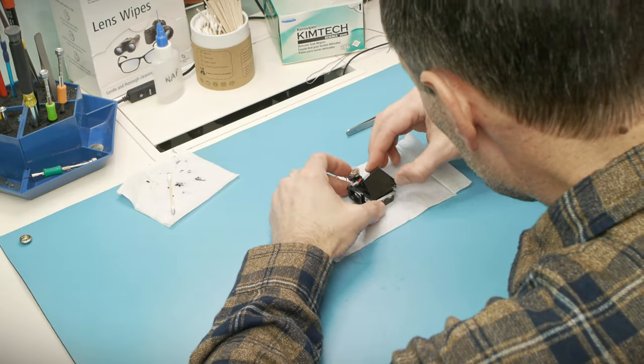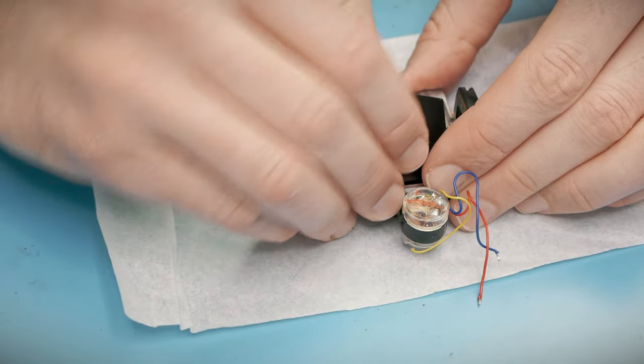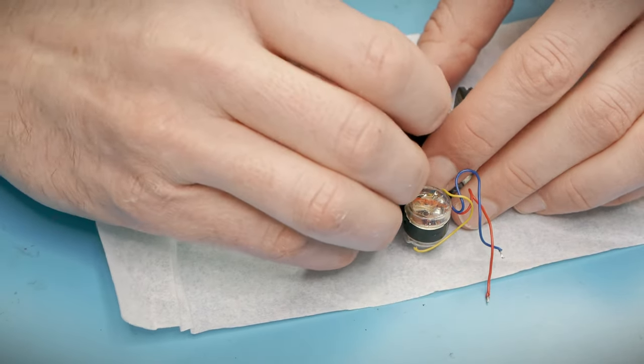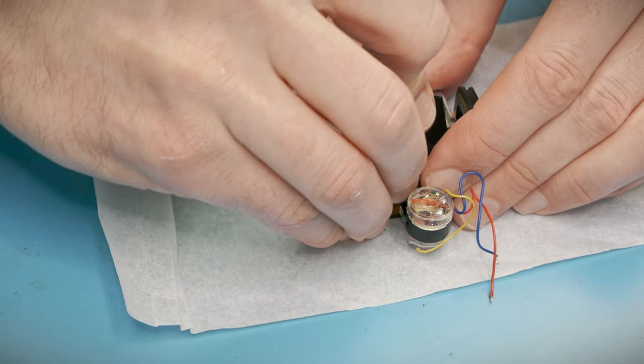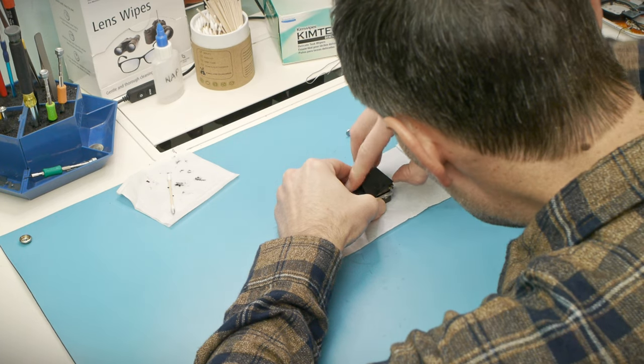And that's because these screws not only hold the pentaprism in place, but they also control the side-to-side alignment of the image in the viewfinder. If I only loosen one, then I can more easily reinstall it with the correct alignment.